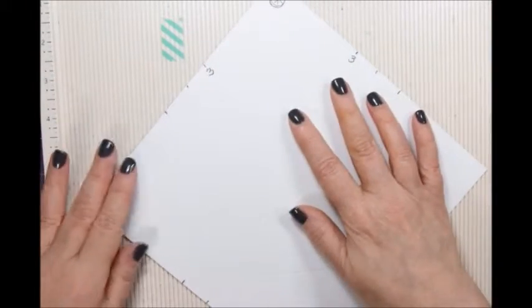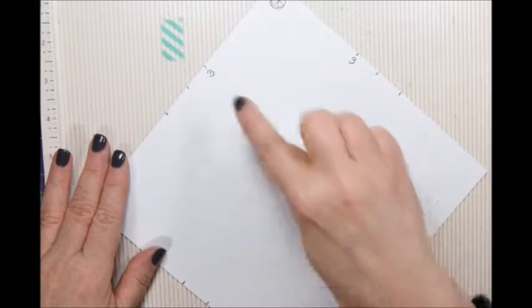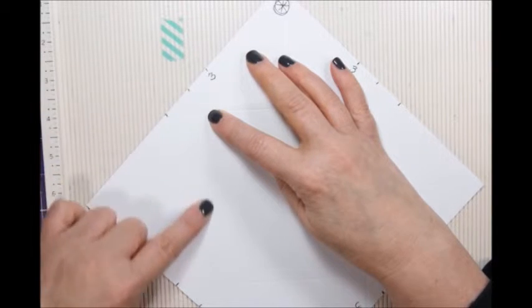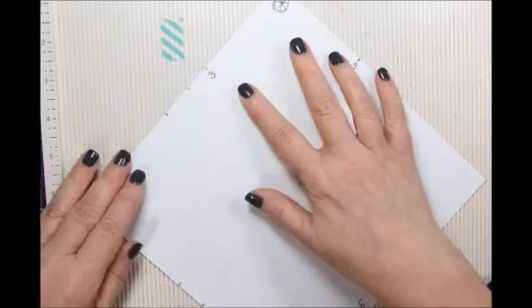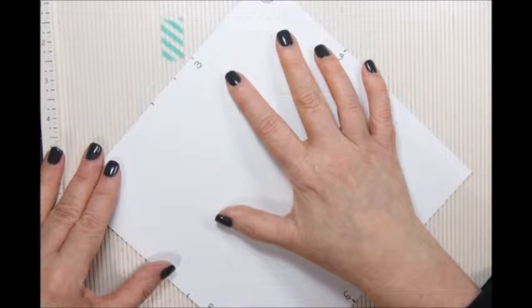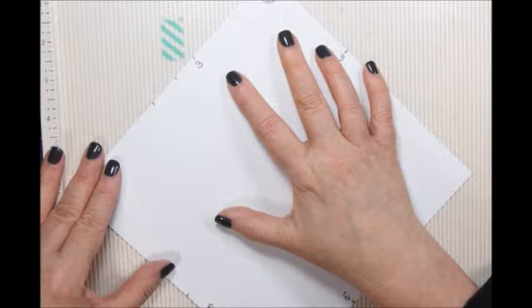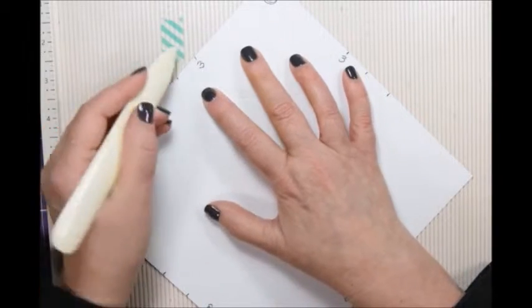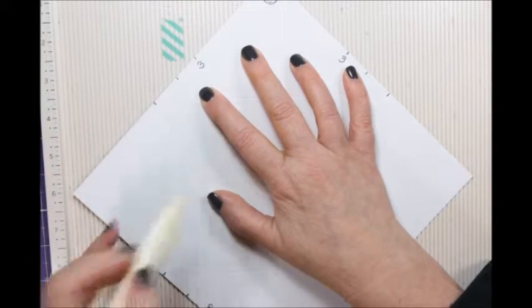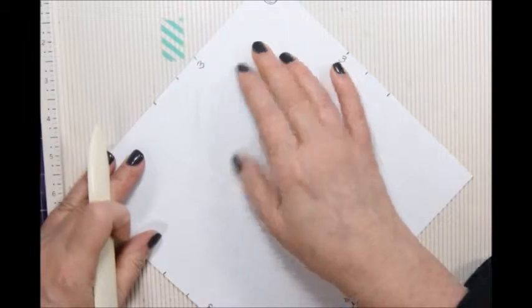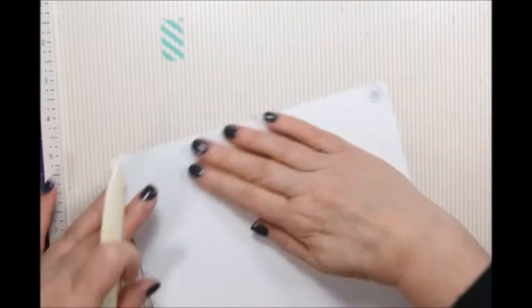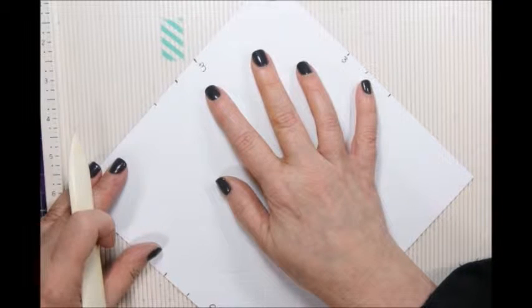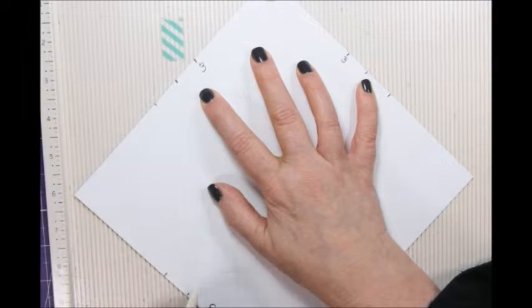But here's another thing that will make it much easier to make those gussets. Between the three and three fourths scores, I'm going to go ahead and make another score right down the middle. Now you can go ahead and mark that if you wish. I just go ahead and eyeball it. If you're into perfection, you just go right ahead and mark that. I'm just going to take my chances here. So a score right down the middle between the three and three fourths inch marks. Now this is diagonal corner to the other corner. So let's do the other side as well. And mark right down the middle. There you go.